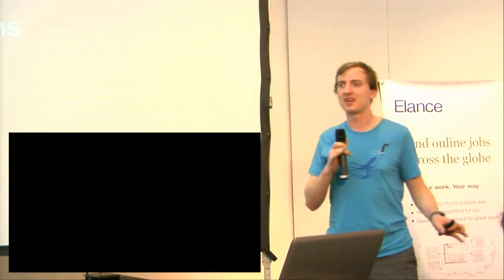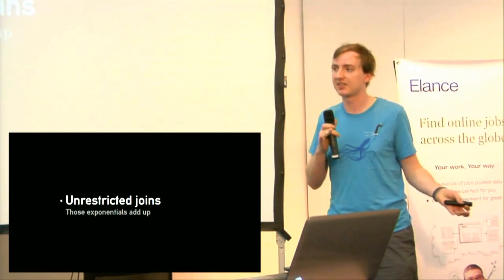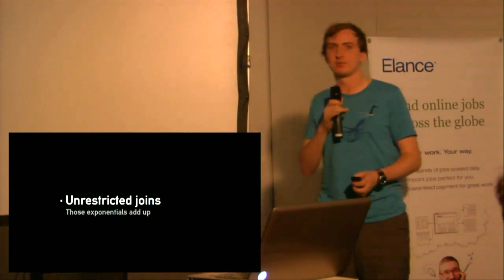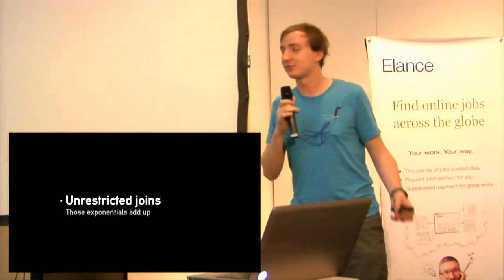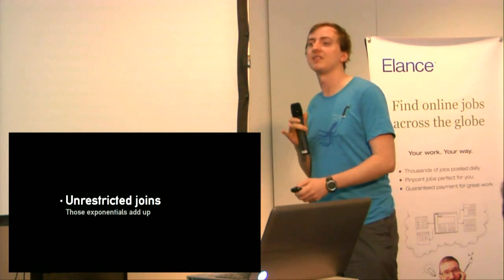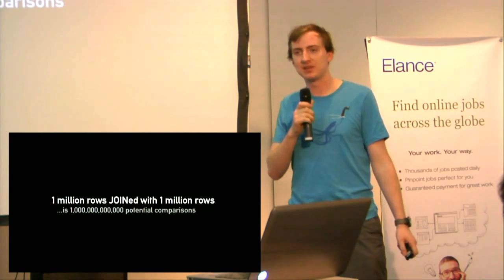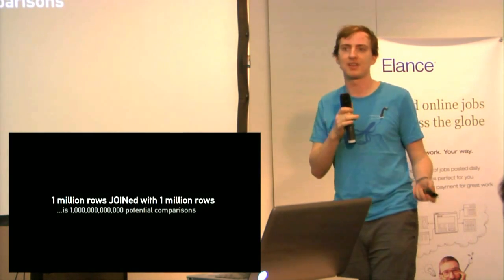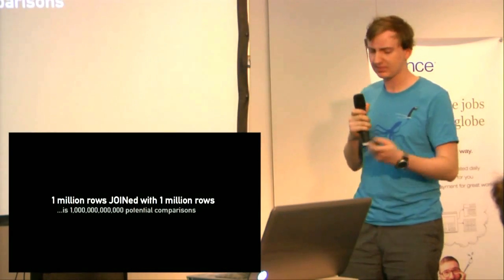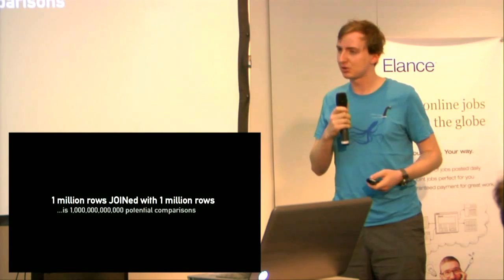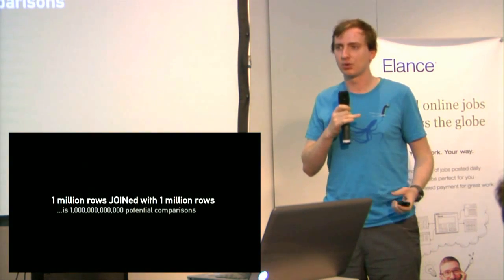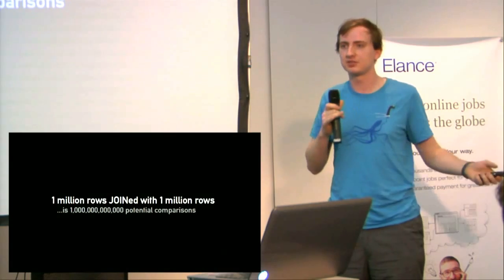The next problem is massive joins. Some people say joins are the source of all evil and you should never use them — that NoSQL is great because there are no joins. That's true, but only in big cases. If you have a million rows in one table and a million rows in another and you try to join between them, that's theoretically one million million comparisons. Databases are smarter than that — they use hash joins and bucket matching — but as you add more rows to a join, it doesn't grow linearly; it grows almost exponentially. So you've got to be very careful of big joins.